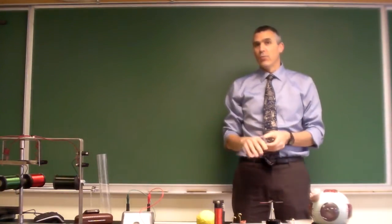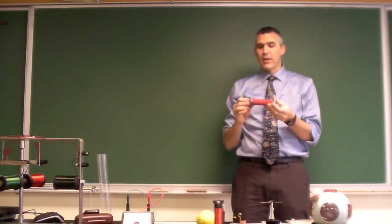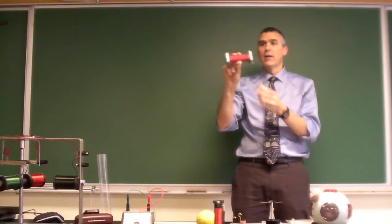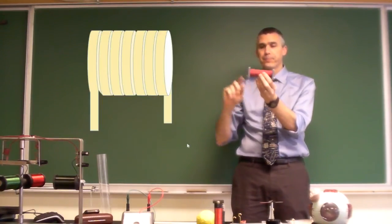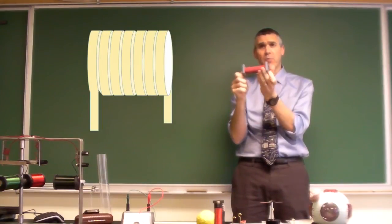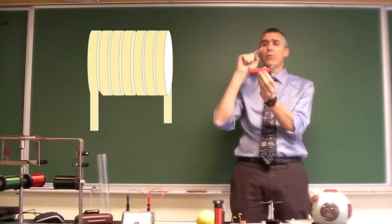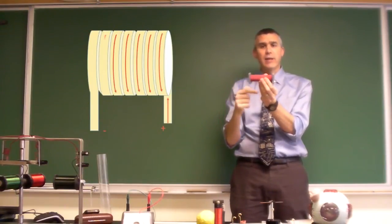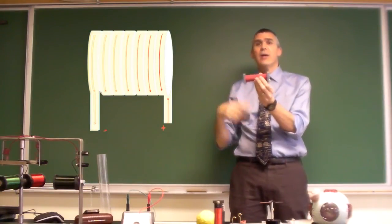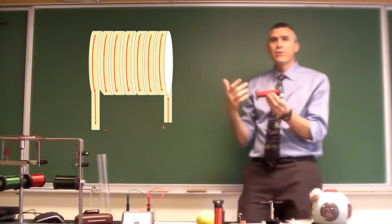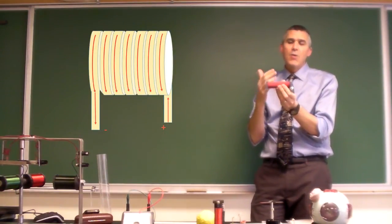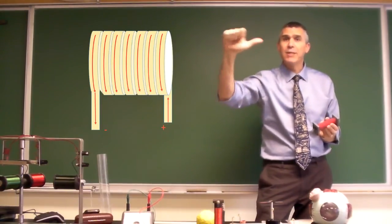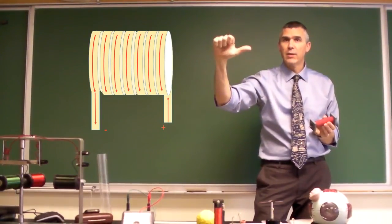Our second right-hand rule deals with current moving through a coiled conductor. So here I have a small coil of wire. And if I were to hook this up to a battery, a current would go through it, going around and around and around again, until it gets to the other side. So in order to figure out the direction of the magnetic field in this coil, I'm going to do the same gesture — I'm going to do the same thing. So this is going to be my second rule: one, two.